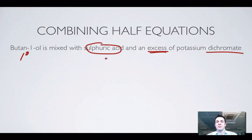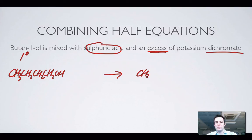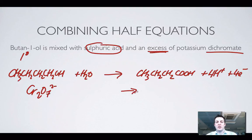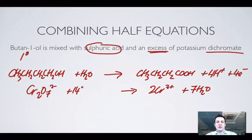So let's write a half equation for that: CH₃CH₂CH₂CH₂OH turning into butanoic acid, CH₃CH₂CH₂COOH. We add water to balance oxygens, then there are four more H's on the left, so plus 4H⁺ and four electrons. The dichromate equation can be taken from the data sheet: dichromate ions turning into Cr³⁺ ions, with seven waters on the right, 14H⁺ and six electrons on the left.